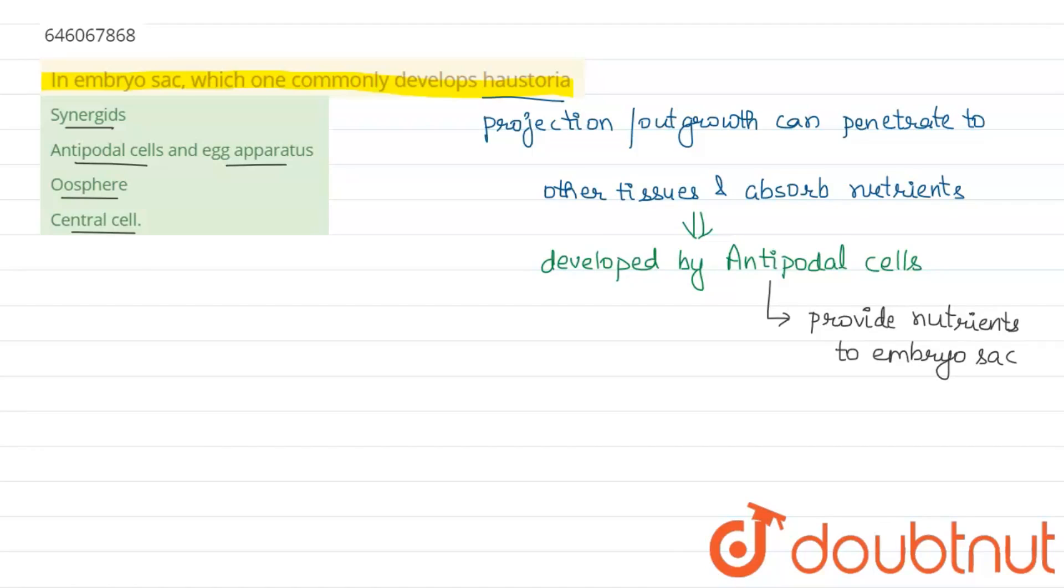So they develop haustoria to aid in their function. Haustoria aids the antipodal in this function. Hence we have the final answer: in embryo sac, which one commonly develops haustoria? It is the antipodal cells, and not the egg apparatus. The antipodal cells are the correct answer.